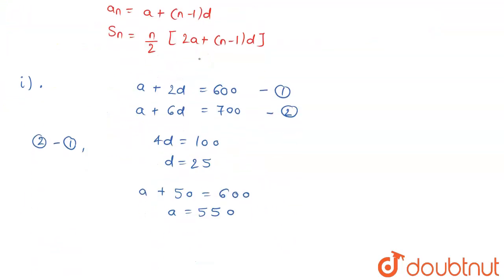Now, since I know the value of A, I know the value of D and I have been asked to find out the production in the tenth year. So, a_10 will be A which is 550 plus (10-1) that is 9 into 25.